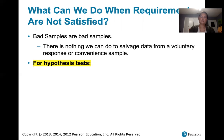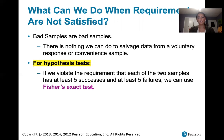But for the last requirement — that we have at least five successes and at least five failures — if that's not met, there are some things that we can do. For a hypothesis test, if that requirement is not met, we can use what's called Fisher's exact test. This is quite a bit more complicated than the methods we've discussed. It uses the binomial distribution rather than using the normal distribution as an approximation to the binomial distribution.